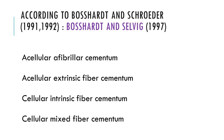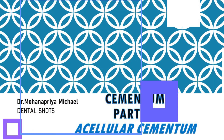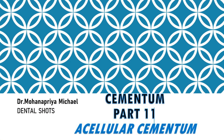According to Bouchard and Solvig in the year 1997, cementum is classified as: acellular afibrillar cementum, acellular extrinsic fiber cementum, cellular intrinsic fiber cementum, and cellular mixed fiber cementum.